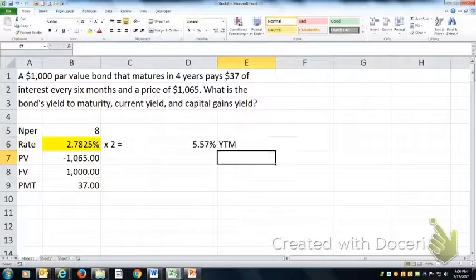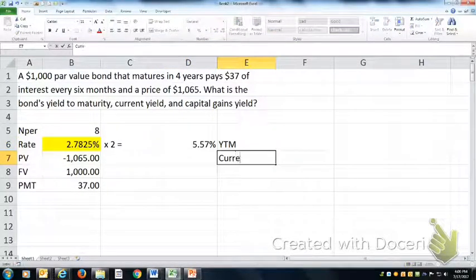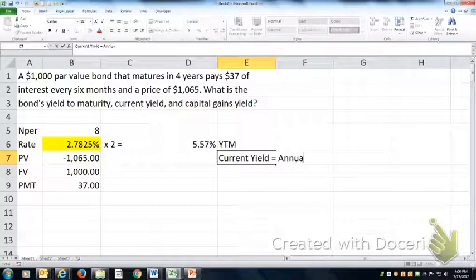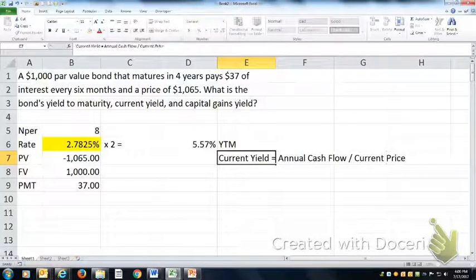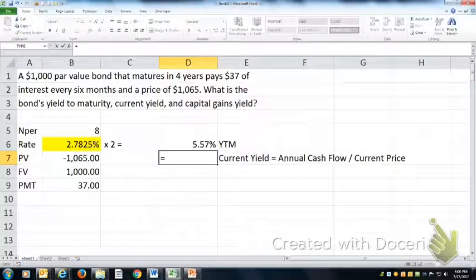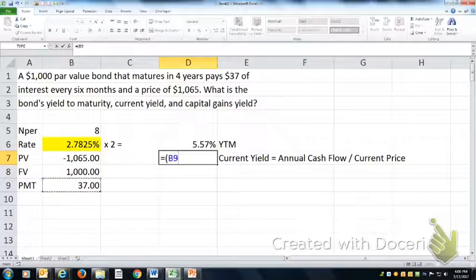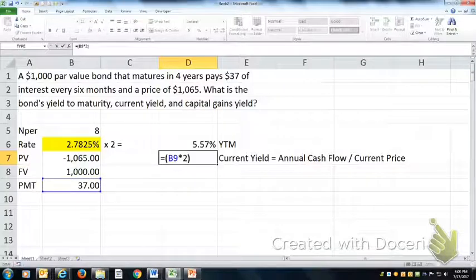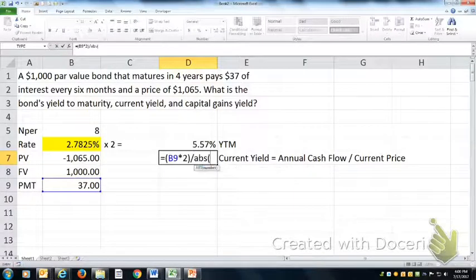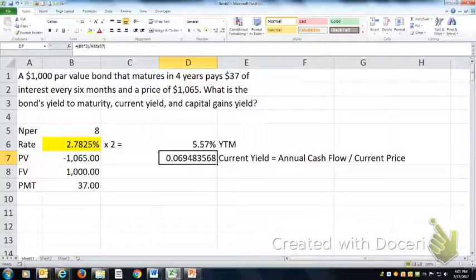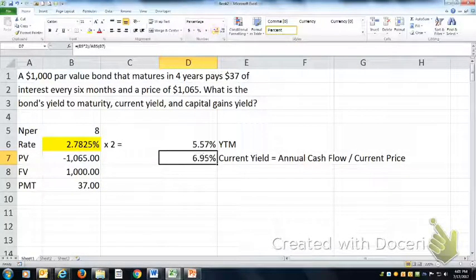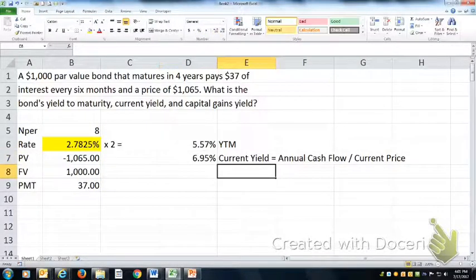The current yield is defined as annual cash flow divided by current price. So that would be equal to $37 twice a year, which is $74, divided by $1,065, and that's your current yield. That's the cash flow yield.